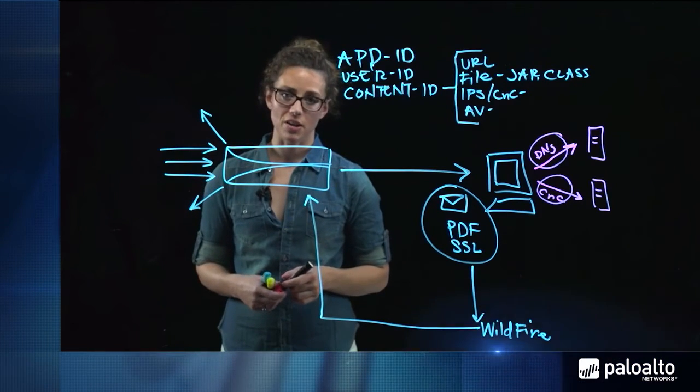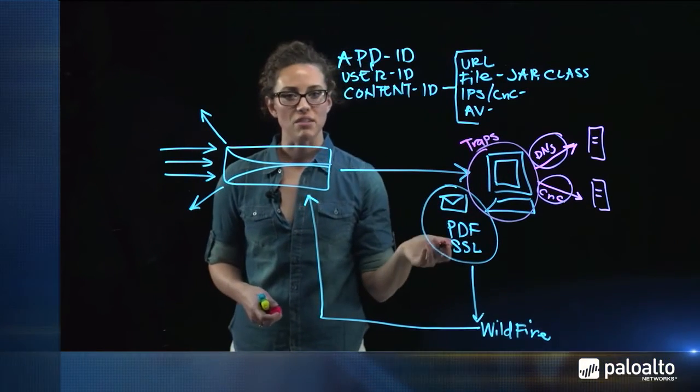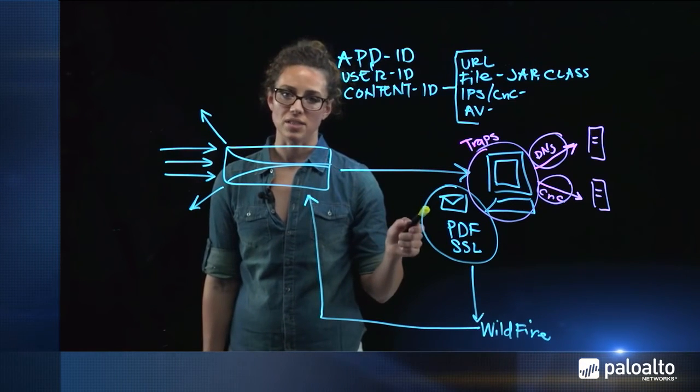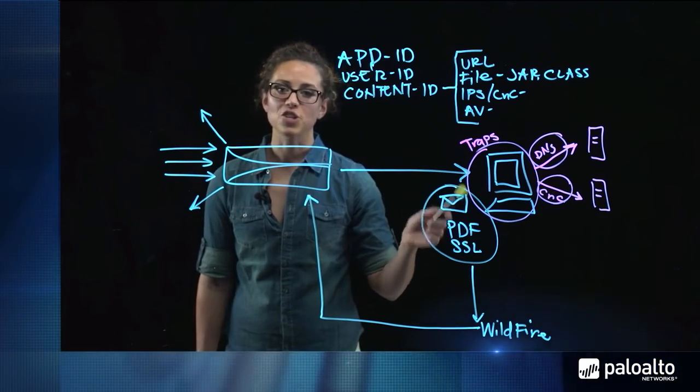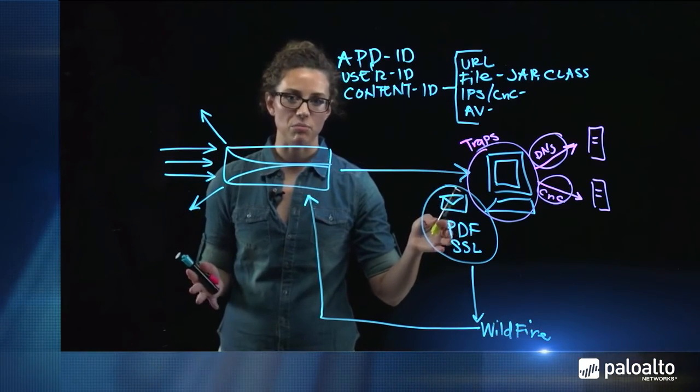And that's where Traps, our advanced endpoint protection technology, comes into play. Traps prevents known and unknown malware and exploits from executing on the endpoint by focusing on a limited set of core techniques common to all exploits and malware. So if a user is the unfortunate victim of a targeted attack — say a spear phishing or watering hole campaign — and inadvertently downloads unknown malware that uses a zero-day exploit on an allowed application, Traps injects itself into the application's process, recognizes a specific exploit technique, and terminates the process. Despite the many thousands of exploits, all of them use a small set of core techniques that must be used in sequence for the attack to be successful. By blocking just one technique in this sequence, Traps can prevent the entire exploit from taking place — no damage done.